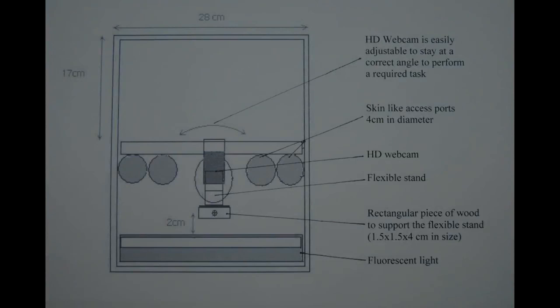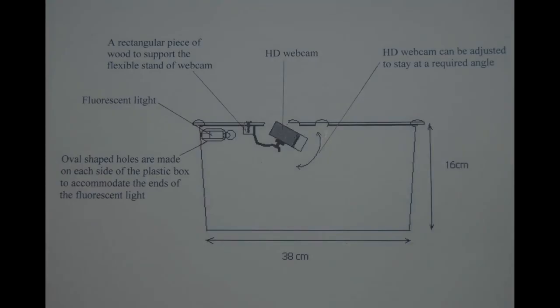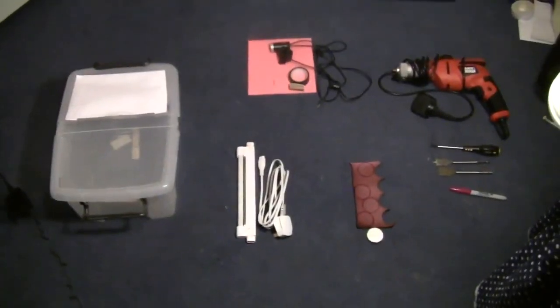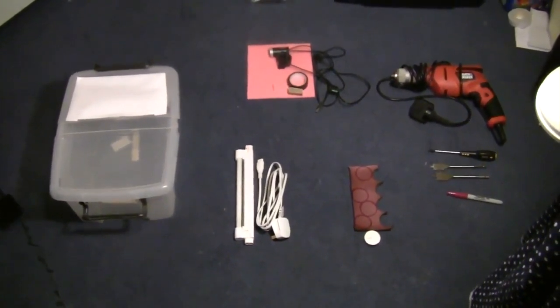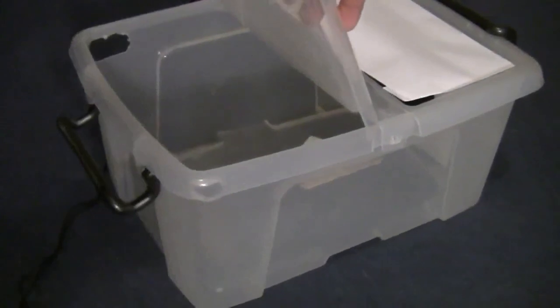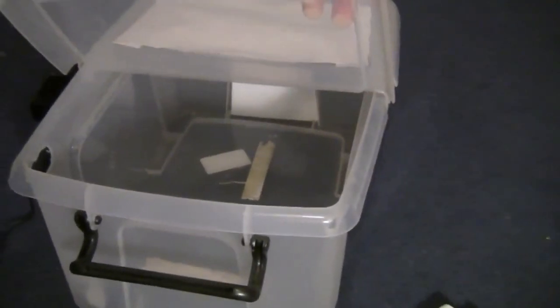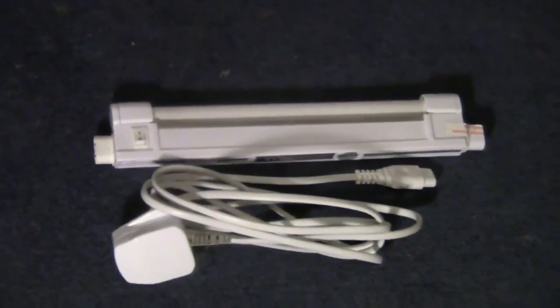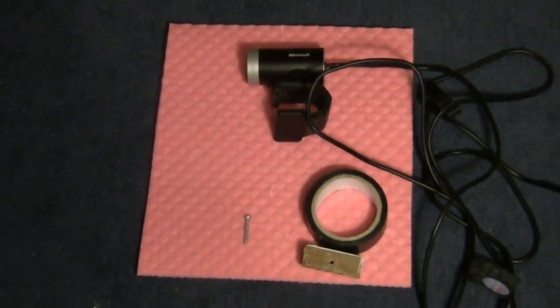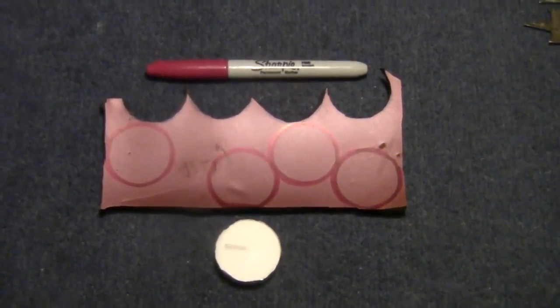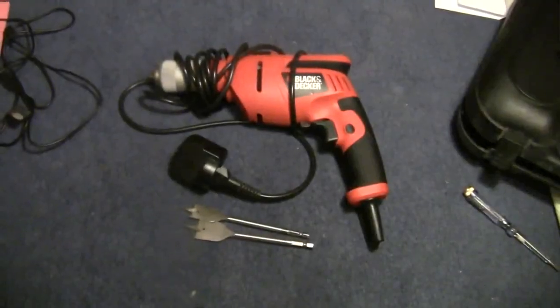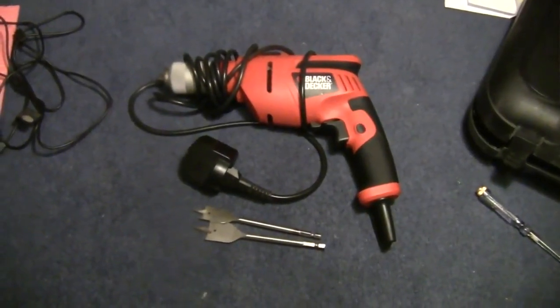Diagram showing top view and side view. Here are the required materials to make a trainer box: 12 liter plastic storage box, a fluorescent light, high-definition web camera, a piece of neoprene, and an electric drill machine with some drilling bits.